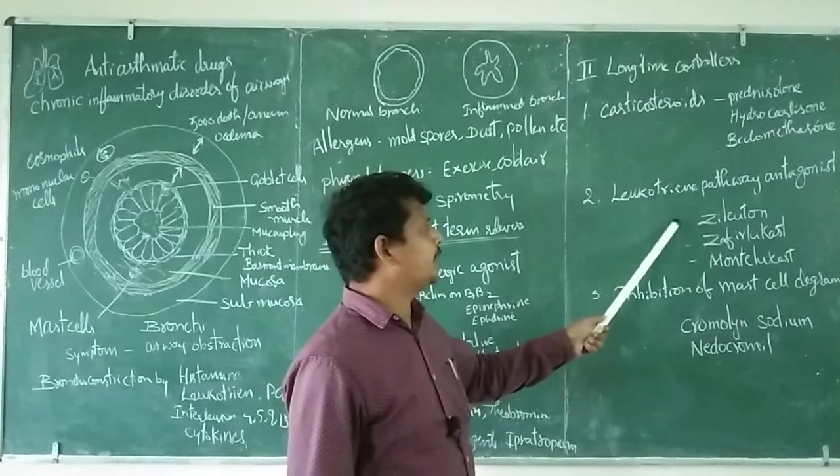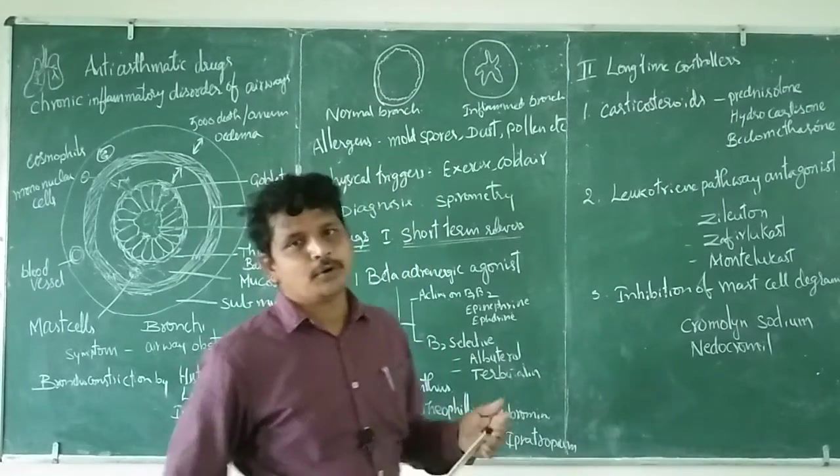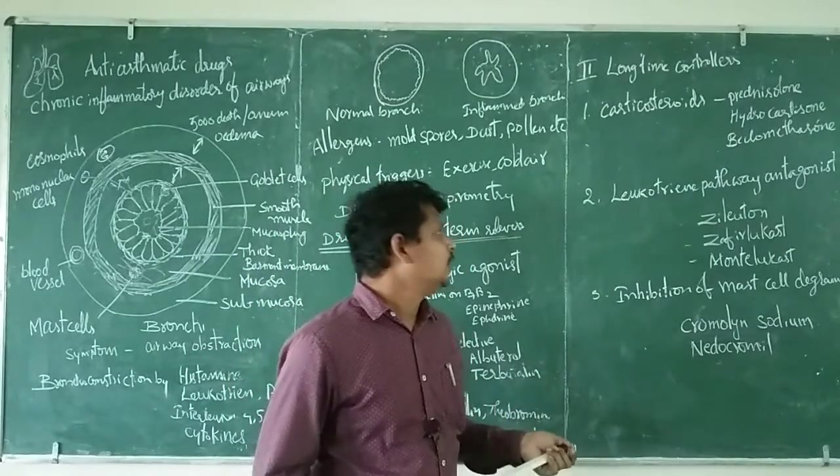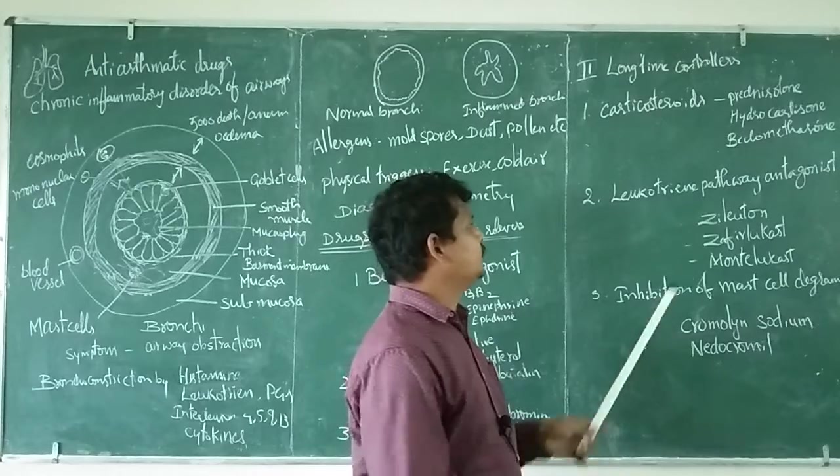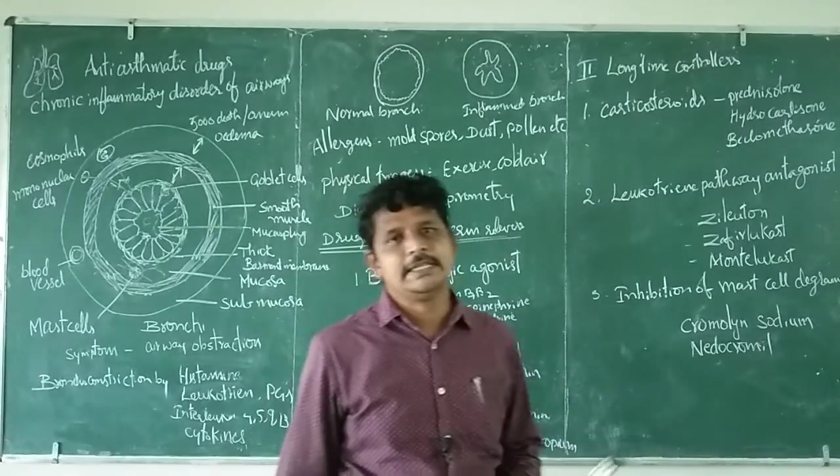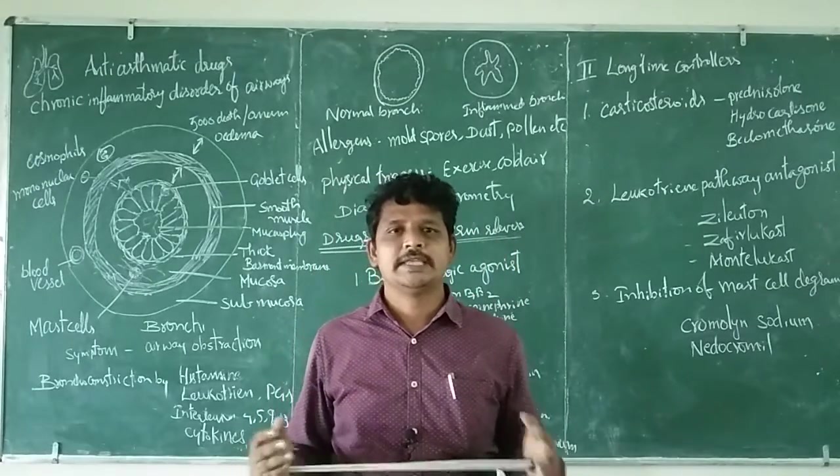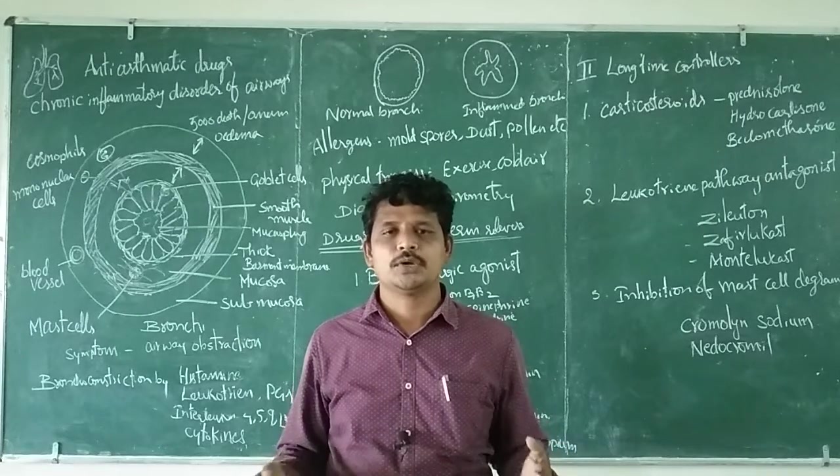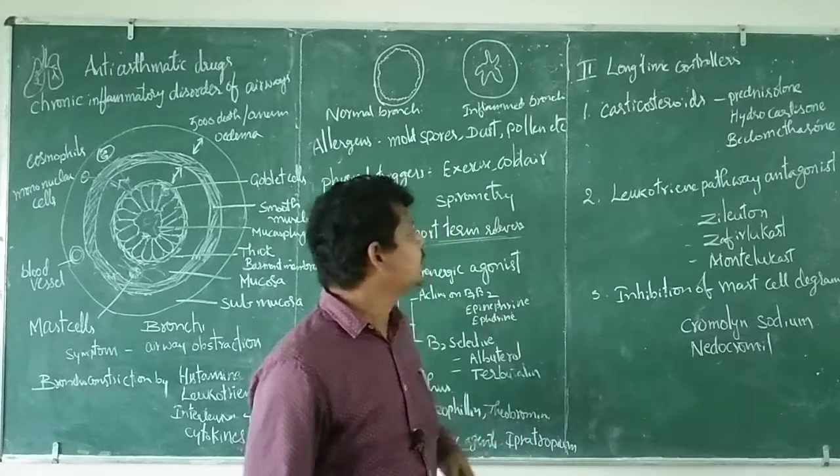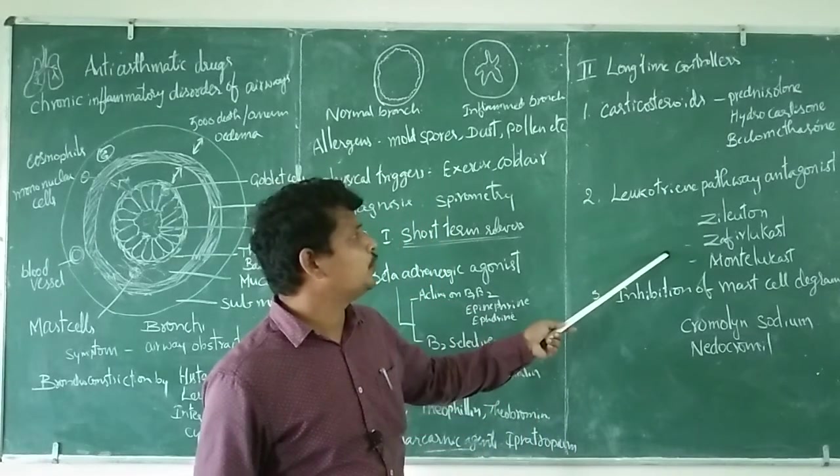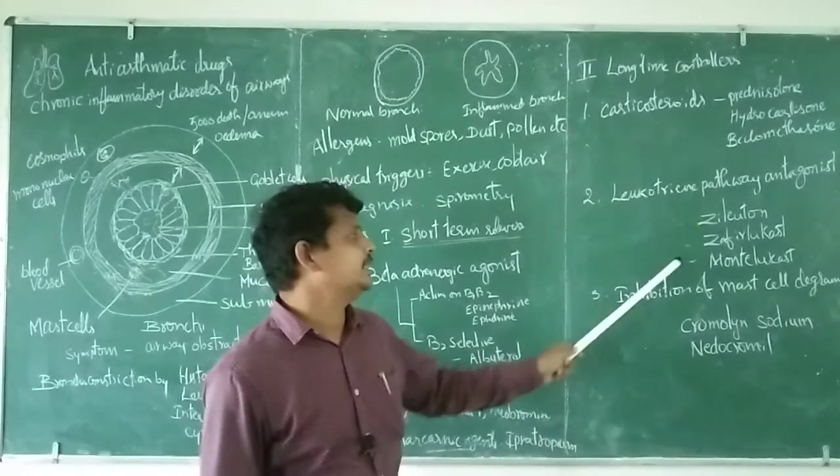Leukotriene pathway antagonists: these are very important drugs. Montelukast, zafirlukast, and zileuton. Normally, T cells secrete harmful chemicals called leukotrienes. These leukotrienes are antagonized by using these drugs.